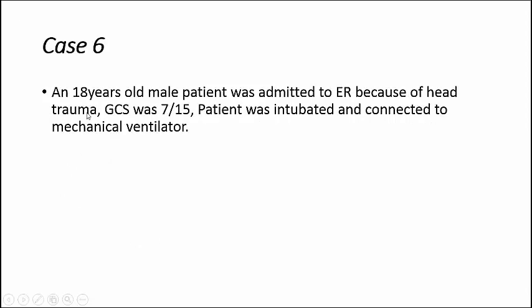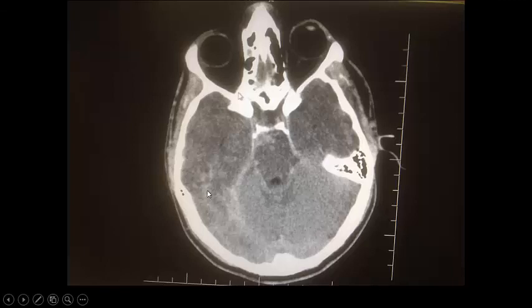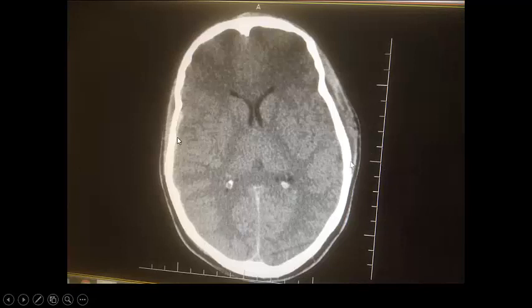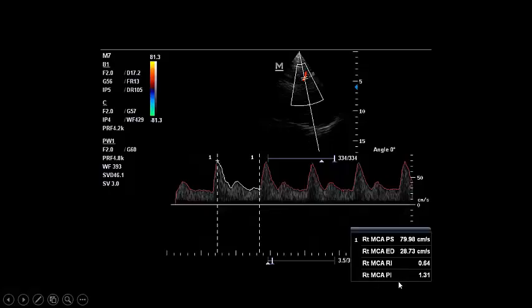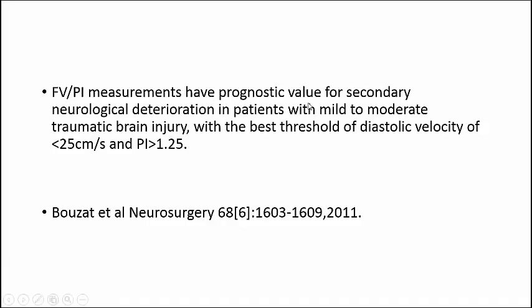Case 6: an 18-year-old male patient admitted to the ER because of head trauma with a GCS of 7 out of 15. The patient was intubated and connected to mechanical ventilation. We routinely perform TCD in all head trauma patients to assess prognosis using the PI and end-diastolic velocity. CT showed contusions, subarachnoid hemorrhage, midbrain injury, small subdural hematoma, and brain edema. Optic nerve sheath diameter was acceptable. Urgent TCD revealed a PI of 1.31 in the right middle cerebral artery.